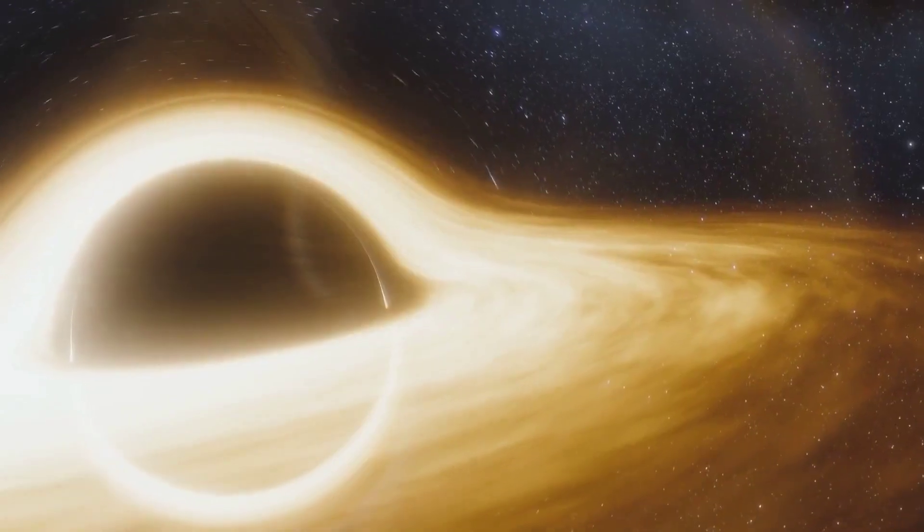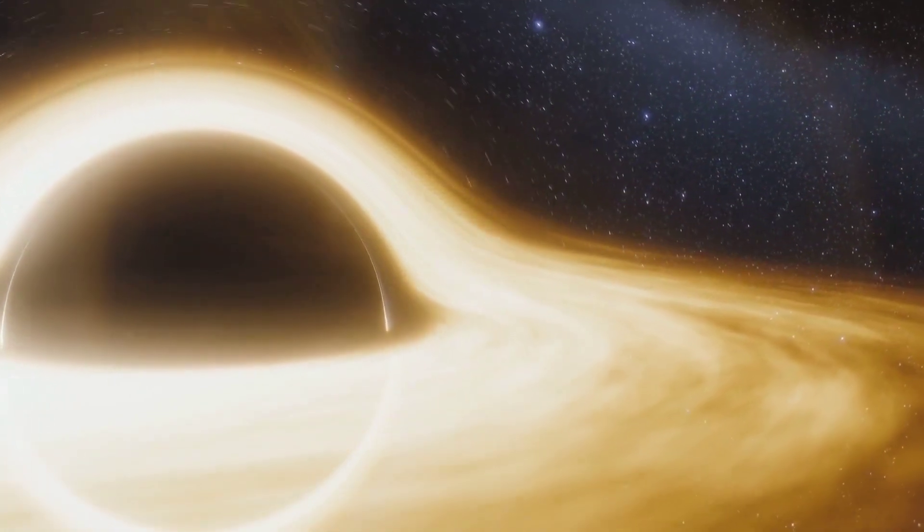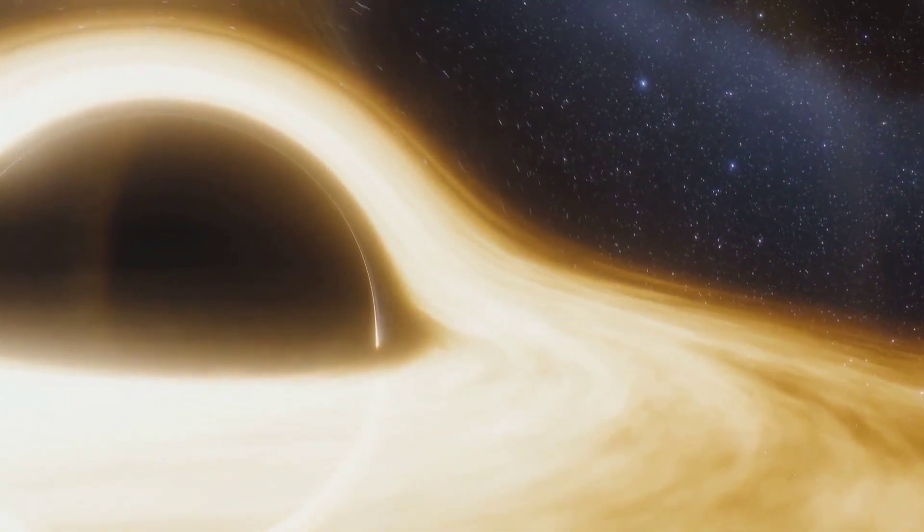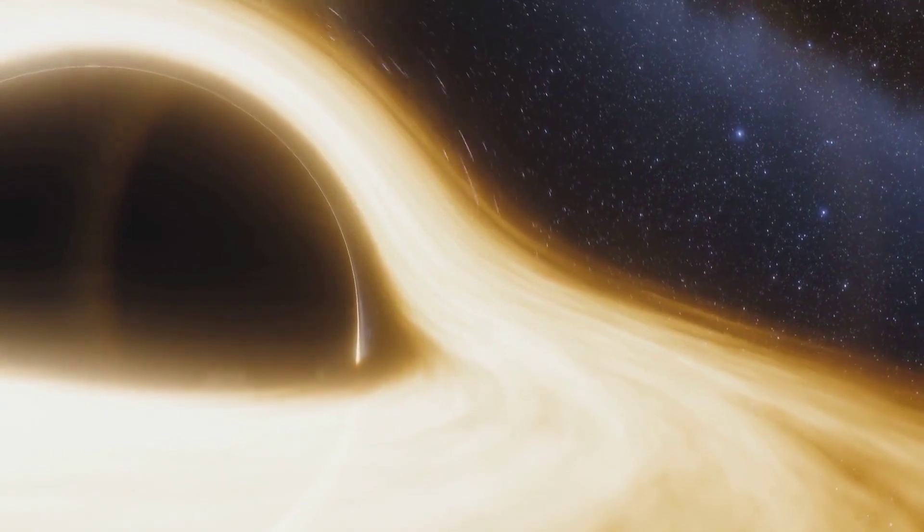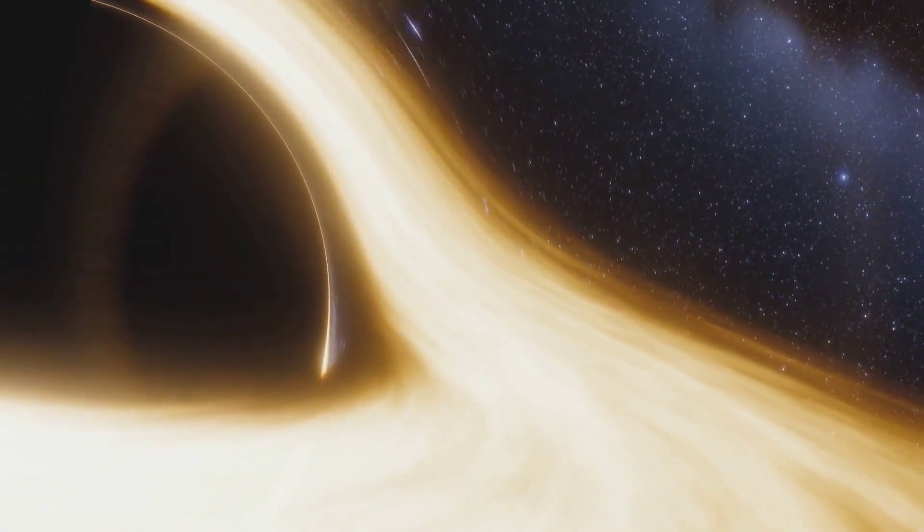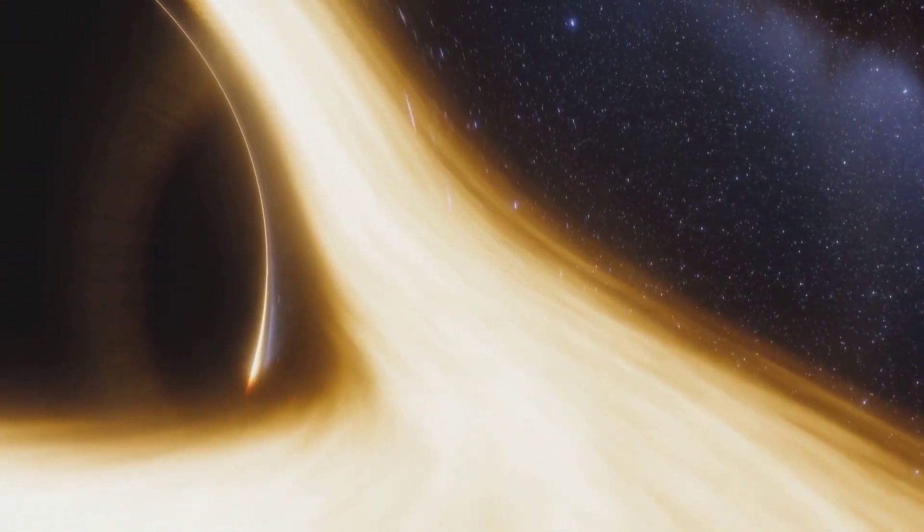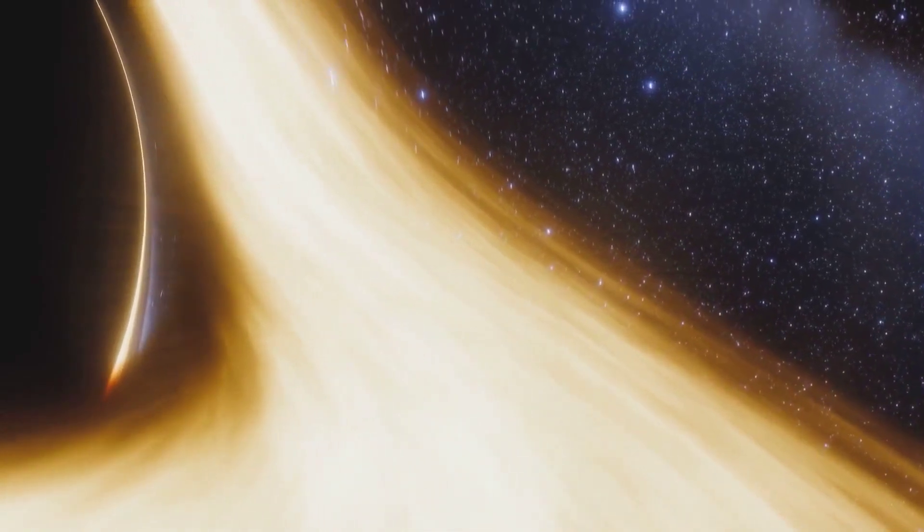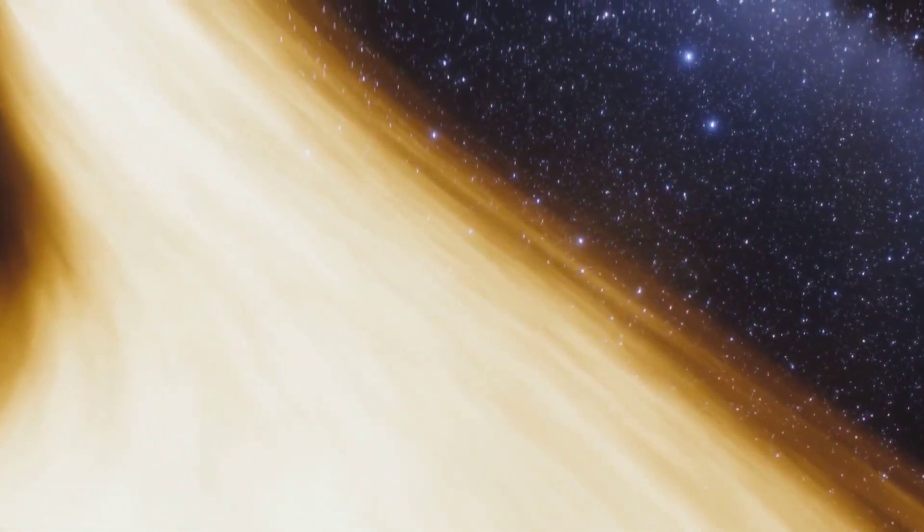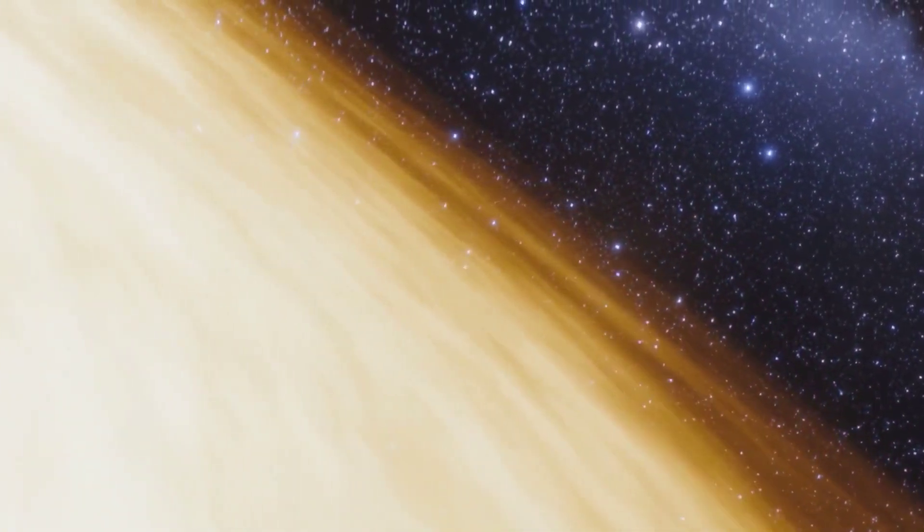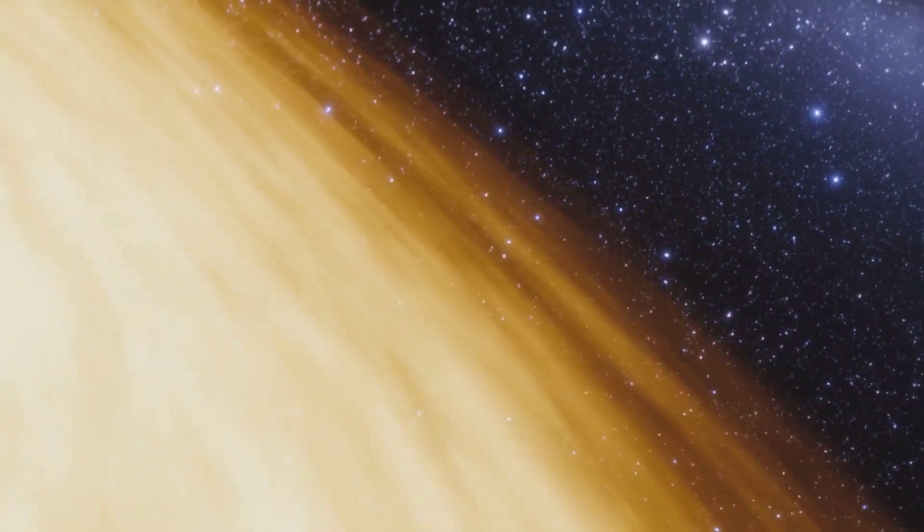But not all black holes are created equal. Stellar mass black holes are formed by the death of individual stars. But there are giants called supermassive black holes, found at the centers of galaxies, that have masses millions to billions times that of our sun. They are believed to grow over time, accumulating matter and possibly merging with other black holes.